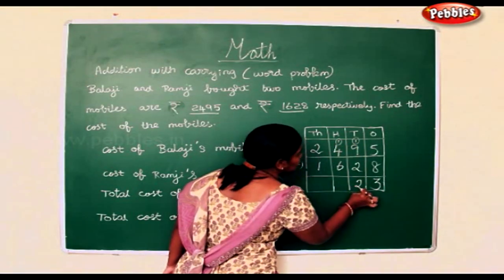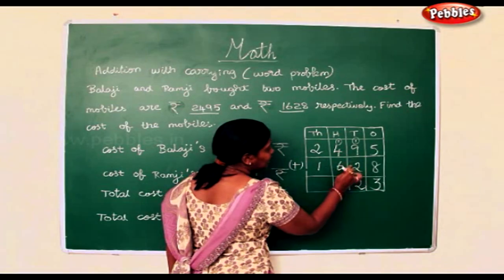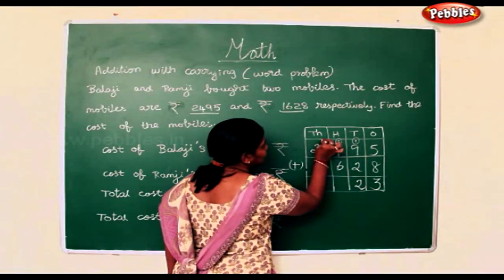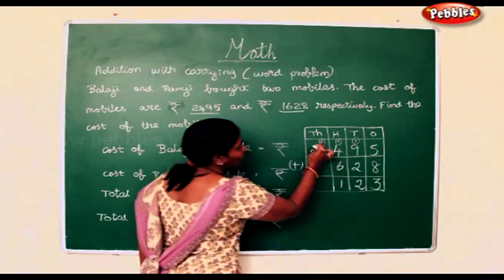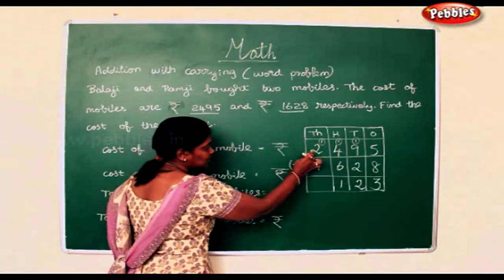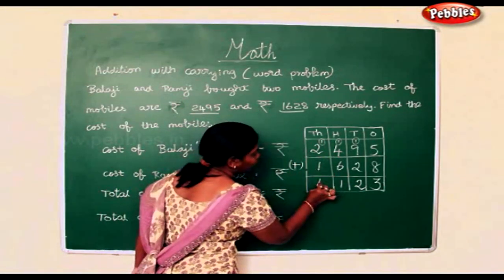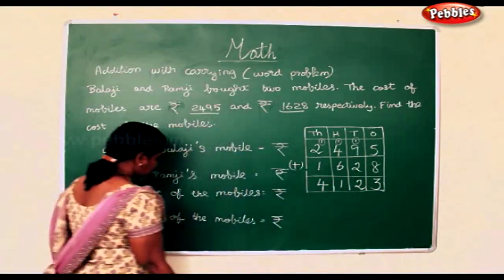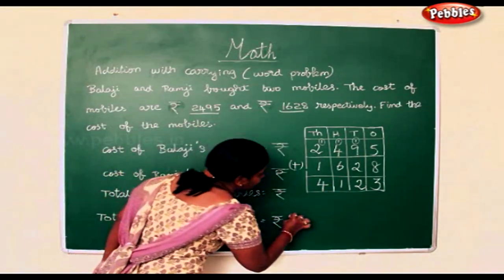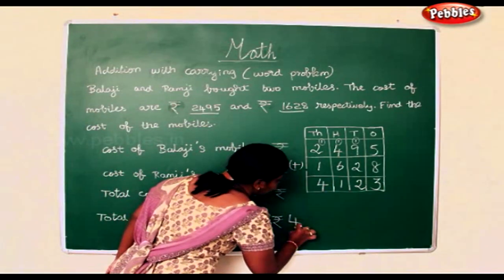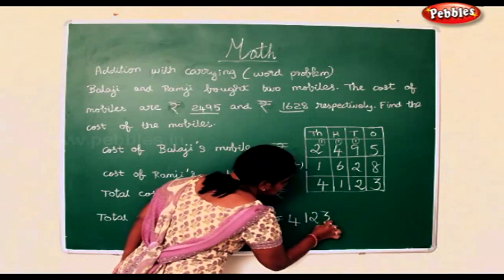2 here. 1 add 4 is 5. 5 add 6 is 11. So 1 here and 1 here. 1 add 2 is 3. 3 add 1 is 4. So the total cost of the mobiles is Rs. 4,123.